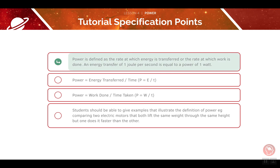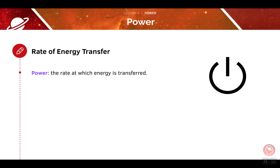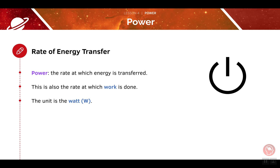First we'll look at the definition of power. In previous tutorials we have looked at how we can calculate the energy transferred when work is done. Now we will look at calculating the rate of this energy transfer. Power is defined as the rate at which energy is transferred — this is also the rate at which work is done. The unit of power is the watt. One watt is equal to transferring one joule of energy per second. For example, if a lamp had a power of one watt, it means it transfers one joule of electrical energy into heat and light energy each second.